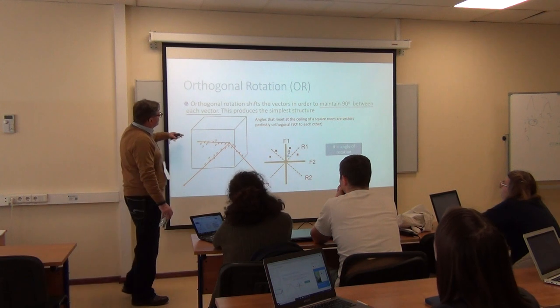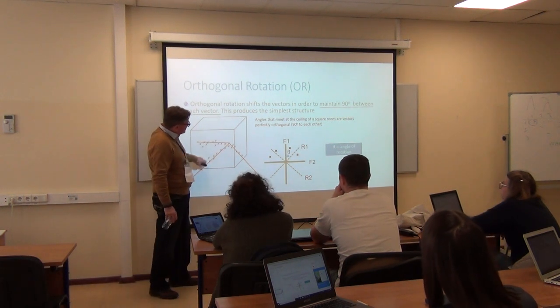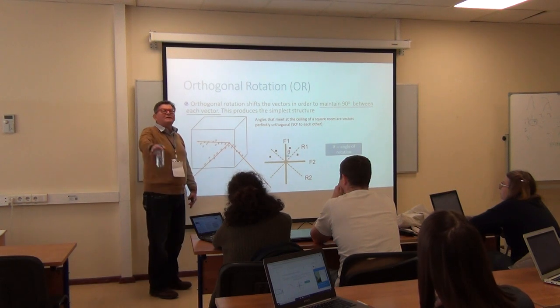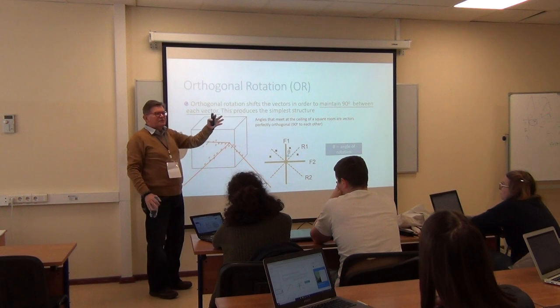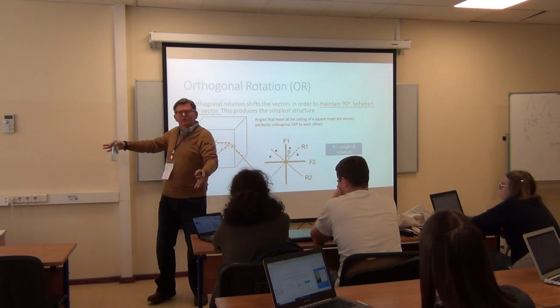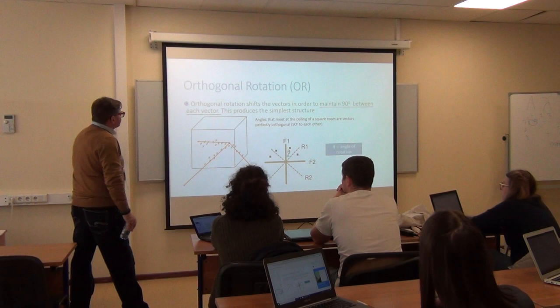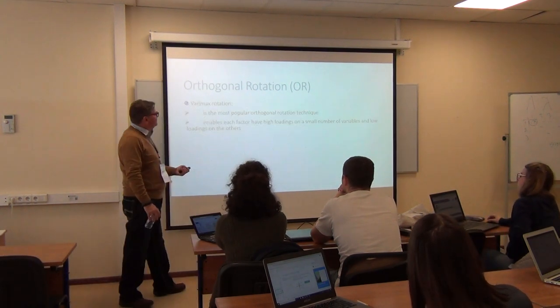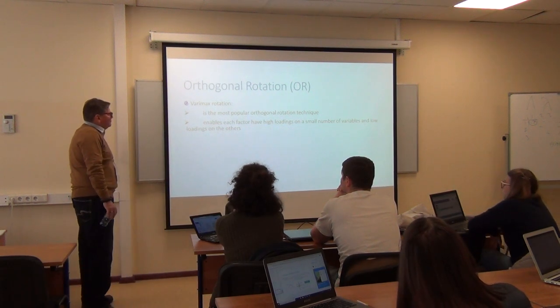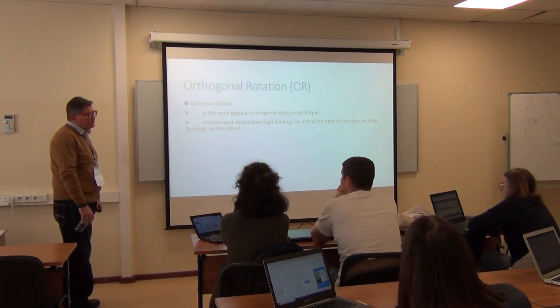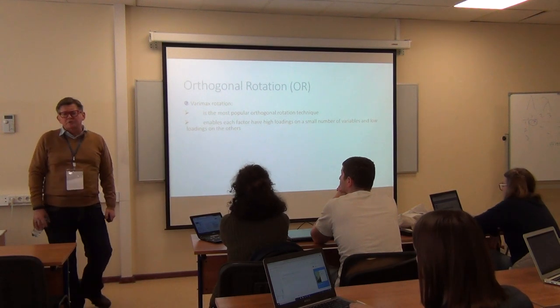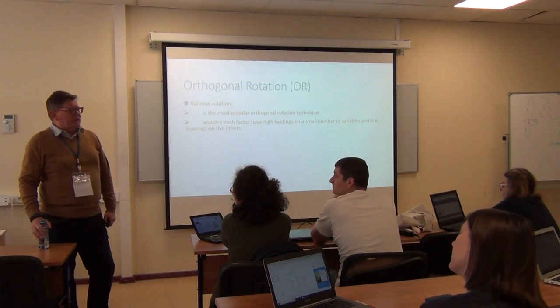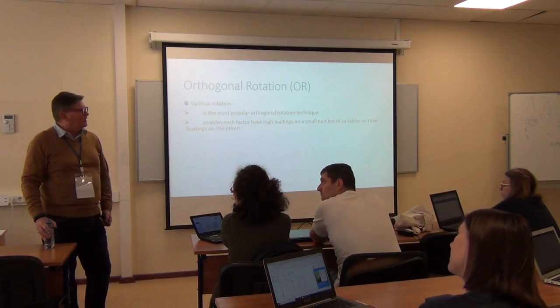So rotation has to do with, can I put this set of vectors at the perspective point where I can now see, ah, that's what groups there, that's what groups here. So all we're doing is a mathematical rotation or transformation. Orthogonal wants to keep everything at 90 degrees, which is hard to believe. And varimax rotation, if you want to do orthogonal, you'll read articles where people say, we did factor analysis. We used PCA with varimax rotation. You go, well, no, that's not a factor analysis.